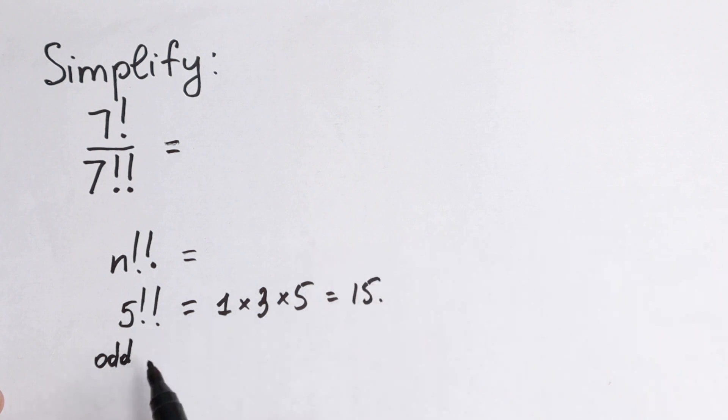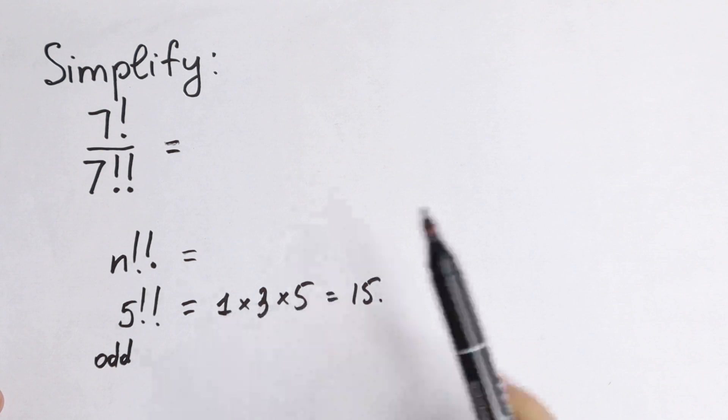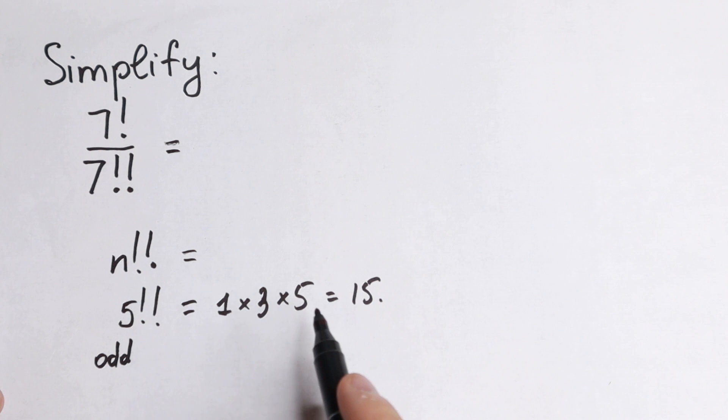That's the rule: we look at the parity of the number and multiply all numbers with that same parity. Since 5 is odd, we multiply odd numbers. For example, 4 double factorial would be 2 times 4, using only the even numbers.